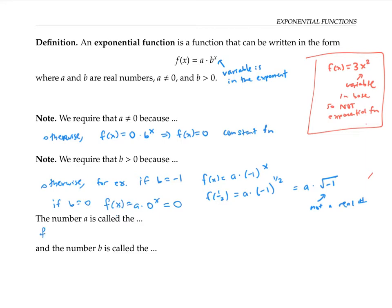The number a in the expression f(x) = a·b^x is called the initial value. And the number b is called the base.